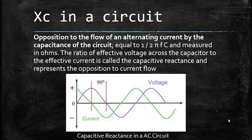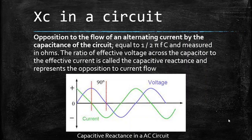Capacitive reactance, i.e. XC, in a circuit: the opposition to the flow of an alternating current by the capacitance of the circuit is equal to 1/(2πFC) and measured in ohms. The ratio of effective voltage across the capacitor to the effective current is called the capacitive reactance and represents the opposition to current flow. Below is the graph for capacitive reactance in a circuit.